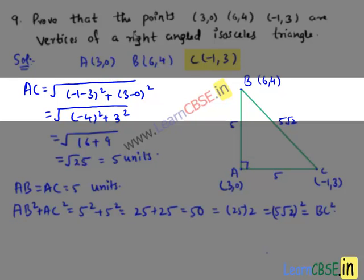Hence, the three points A, B, and C are the vertices of a right-angled isosceles triangle.